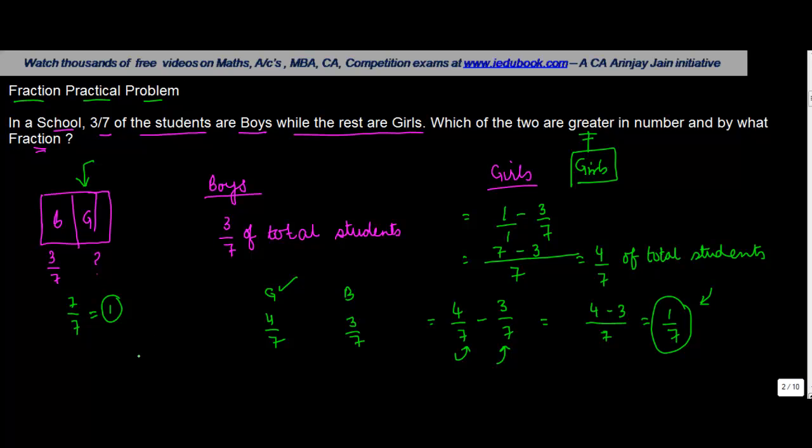If you see, this can also be looked at diagrammatically. Let's say 1, 2, 3, 4, 5, 6, 7. Now there are 7 parts in which the students are divided. We know that the boys represent 3 of these 7 parts.